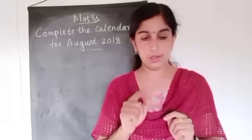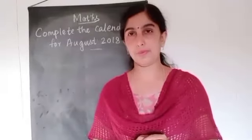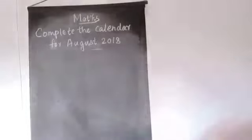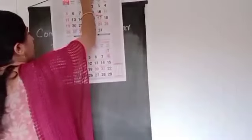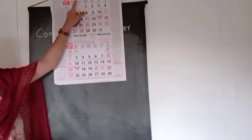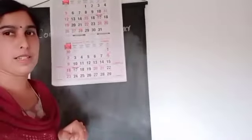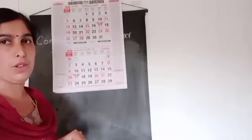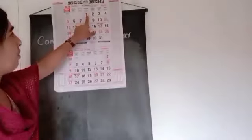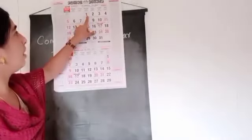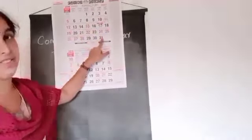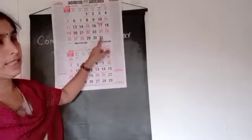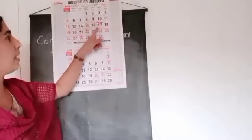After filling the numbers you want to answer these questions and complete. I will show you so you can do it without mistake. See, August 1st is starting from Wednesday and 31st is Friday. Then you fill all these numbers in that calendar.